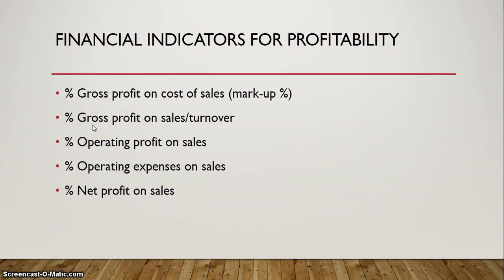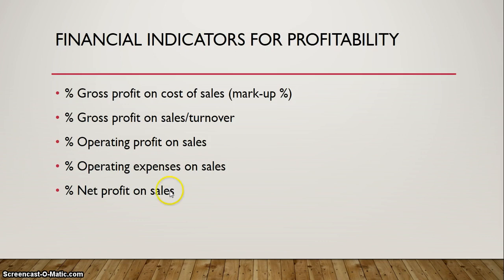There are other indicators as well. That is the indicator of gross profit on sales. Another term you need to get to grips with is turnover — it is the same as sales. Another indicator is the percentage operating profit on sales, and percentage operating expenses on sales — that is an important one, because the lower the expense, the more profits; the higher the expense, the lower the profit. And then, of course, your percentage net profit on sales. You will see that all these indicators are expressed in terms of percentages.